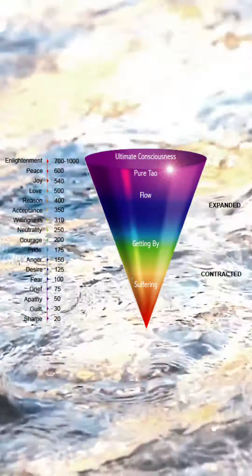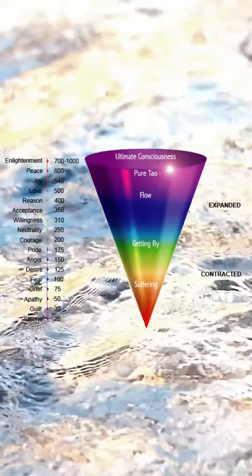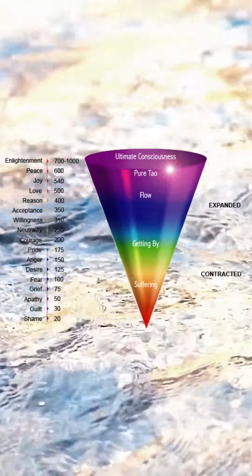The mid-550s are unconditional love, which is the level that, from our research, is the optimal place to start for most people.